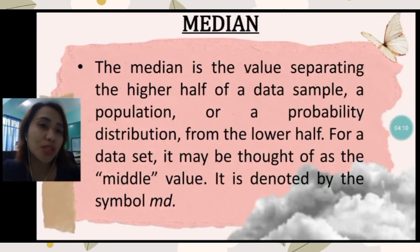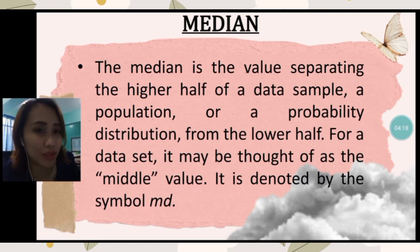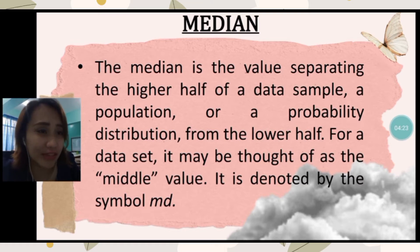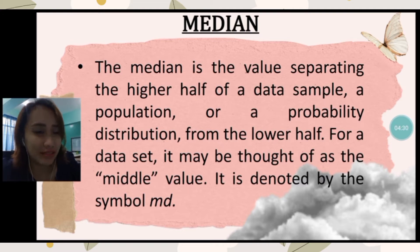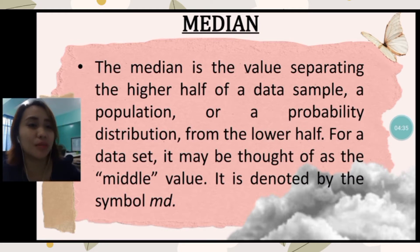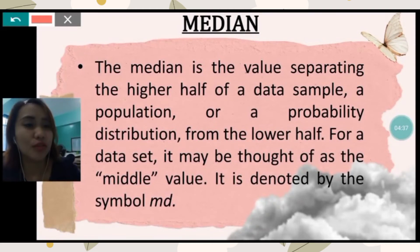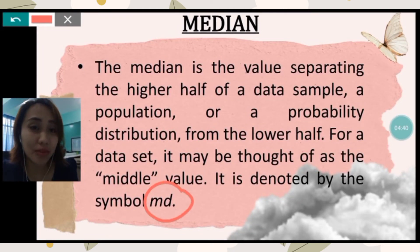The next measure of central tendency is the median. The median is the value separating the higher half of a data sample, population, or probability distribution from the lower half. For a data set, it may be thought of as the middle value. It is denoted by the symbol MD — for mean the symbol was x-bar, and for median it is simply lowercase m-d.